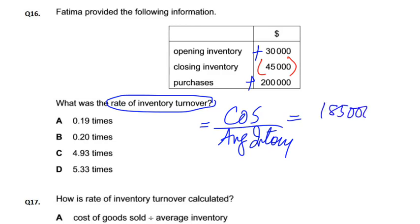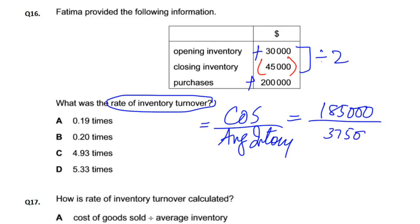Aur average inventory kaise hai? Average aayegi opening plus closing divide by 2. Dono ko add karo: 30 plus 45 — yeh ho gayi 75, divide by 2 = 37,500.